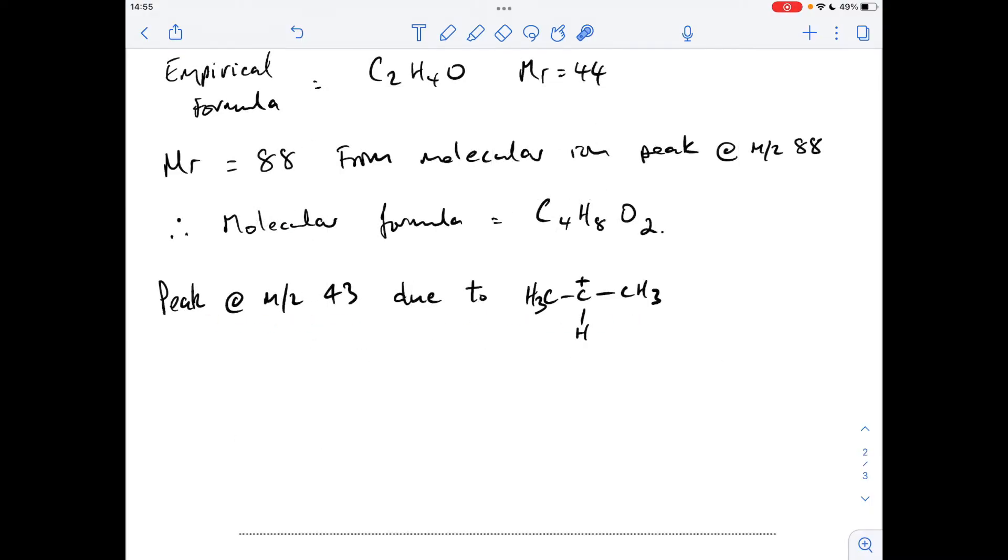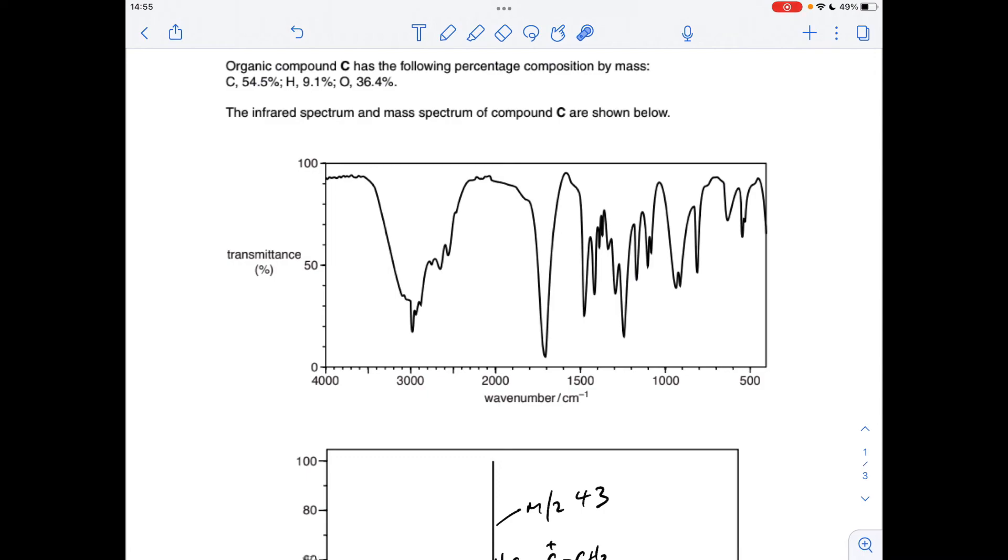So we've got the infrared spectrum now. There's two key zones I always look at first, so around about the 3000 mark, we've got an obvious OH absorption here, and it's in just the right range for a carboxylic acid OH.